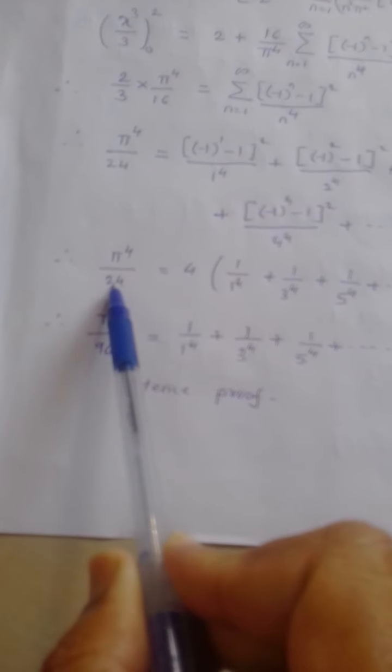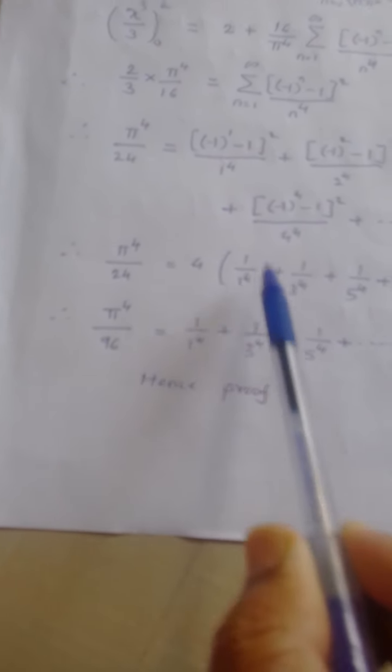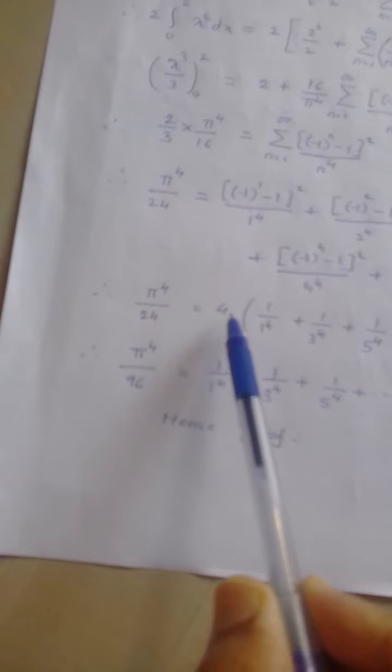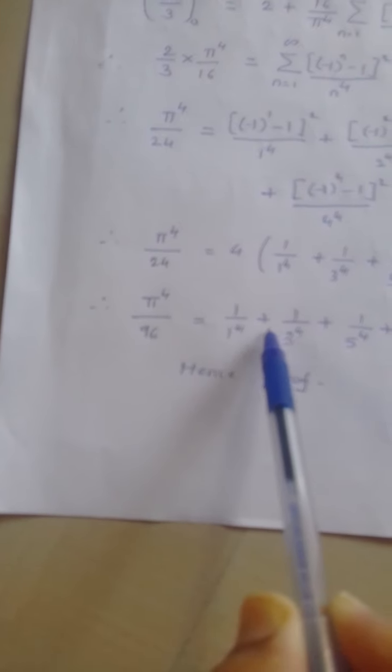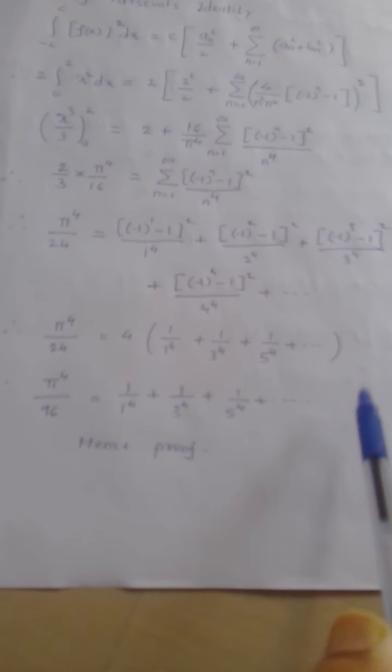Finally, after simplification: π⁴/96 = 1/1⁴ + 1/3⁴ + 1/5⁴ + and so on. Hence proved — we have obtained the required result.